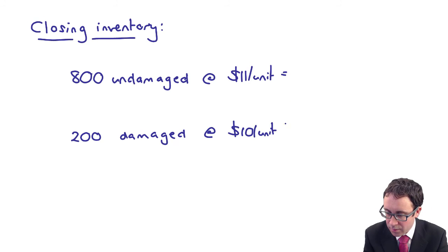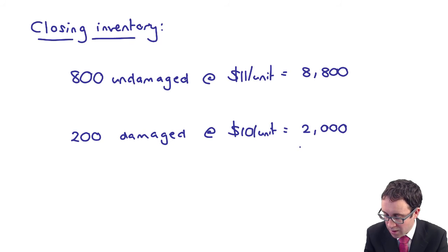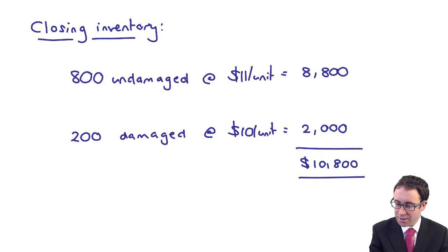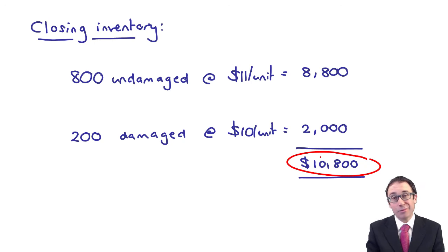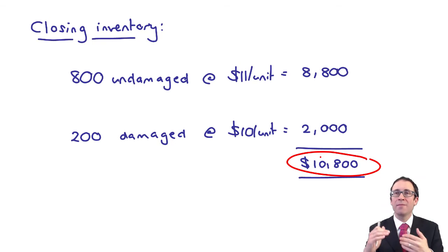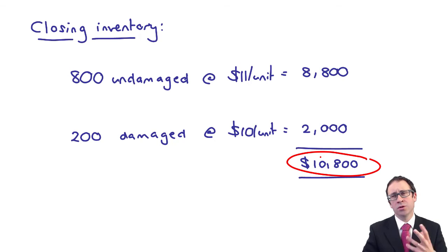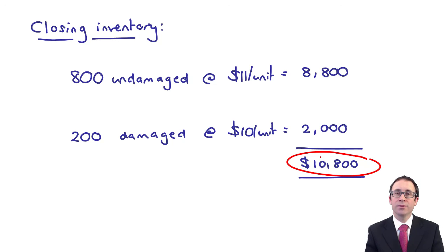Running through the calculation: 800 undamaged units at $11 gives $8,800, and 200 damaged units at $10 gives $2,000, for a total closing inventory value of $10,800. That's the value shown in the statement of financial position. It's a bit tricky — you really have to think about the valuation of damaged versus undamaged goods separately, on a line-by-line basis. Even though it's the same type of inventory, it's separated into damaged and undamaged. Practice the questions in the study text and revision kit of your chosen tuition provider, and it should be some easy marks in the exam.